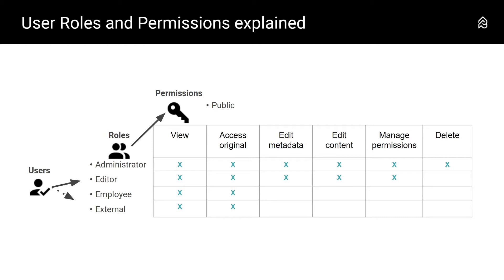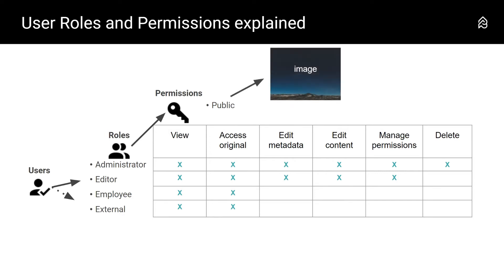All user roles should have access to content with the 'public' permission, but what they are allowed to do is different. Employees and external users can view and access the original file. Editors are additionally allowed to edit metadata and edit content — giving them the right to replace the original file — and manage permissions, allowing them to assign a specific permission to content. The only thing administrators can do additionally is delete content.